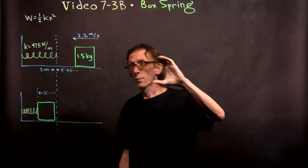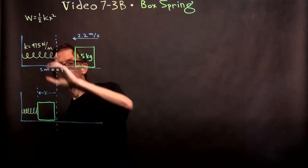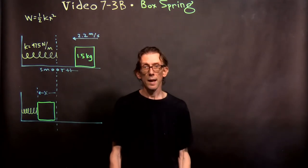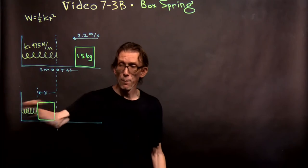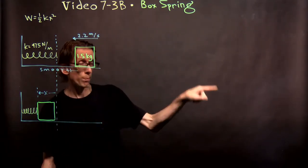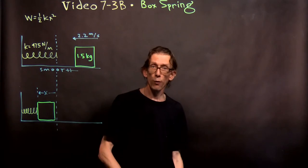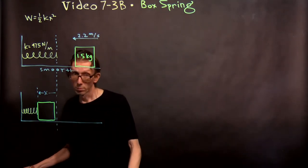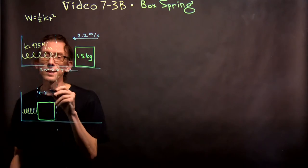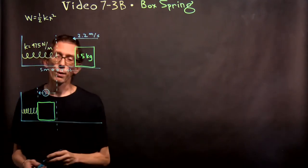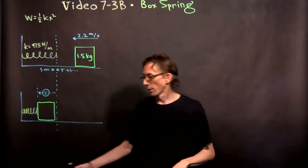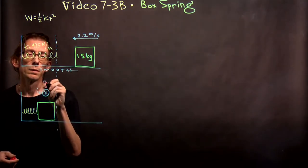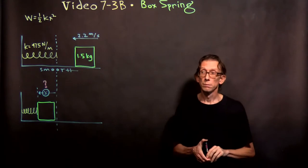The block is going to hit the spring and compress it some distance x. For an instant it's going to be still, because the spring is going to push back and push the box back out that way. No friction, right? What I want to know is what is the maximum compression of the spring x — how far does the spring compress before it pushes the box back out?